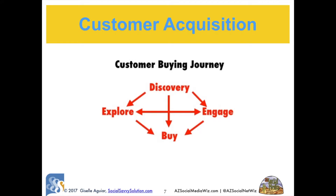There are basically three types of customers — rarely will they go from discovery to buying directly. Those are your impulse buyers. The gal that sees a pair of boots on Pinterest and has to have them right away will click on that buy-now button. Pinterest, Instagram, Snapchat, and Facebook are offering these as part of their paid advertising programs. Usually a potential customer will either want to explore or engage before they buy — exploring is on their own; they'll read everything on your website, Google reviews, ask their friends.